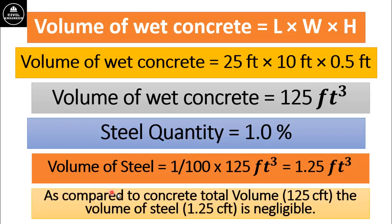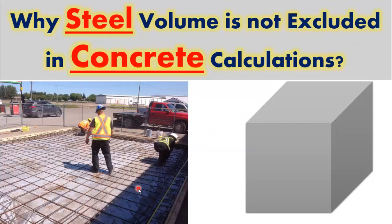As you can see, compared to the total concrete volume of 125 cubic feet, the volume of steel — 1.25 cubic feet — is very less and it is negligible. This is the reason why steel volume is not excluded in concrete calculation and is ignored during concrete quantity calculation. Thank you very much for watching.